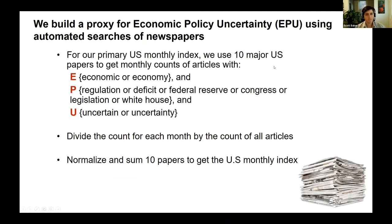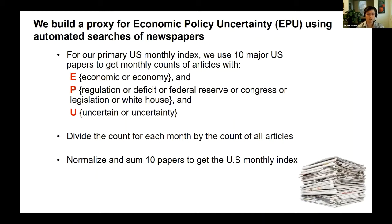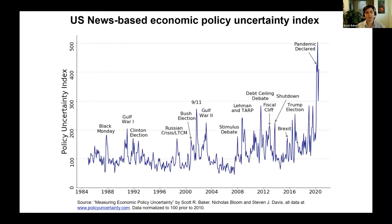I've been working in particular with Nick Bloom and Steve Davis for a number of years, thinking about using newspapers to measure various things. Our primary paper uses newspapers to measure economic policy uncertainty. We've set up a website as a clearing house for some of this information, our own indexes and others. Very briefly, at the time we were not as conversant in machine learning as Jerry was, so we took a much simpler approach — looking at major US newspapers and the fraction of articles that discuss policy uncertainty. We measure this by articles containing one of each of several sets of terms: a term about uncertainty, a term about the economy, and a term about various policy-related concepts.